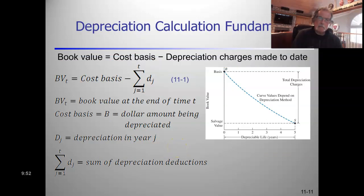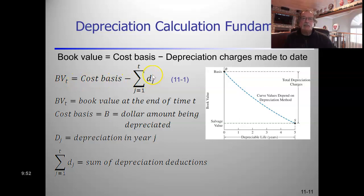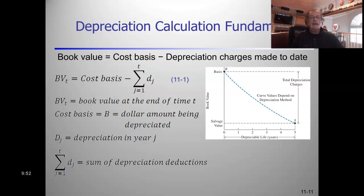The book value as a function of time declines each year by the amount of depreciation taken that year. The book value at the end of period zero is basically what you paid for the asset, since no depreciation has been taken yet. The book value at the end of period one is what you paid minus the depreciation in the first year. So the book value declines over time down to its estimated salvage value.